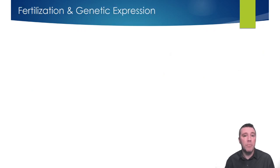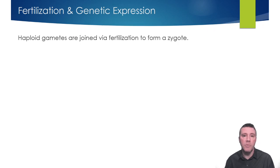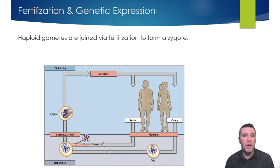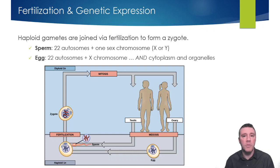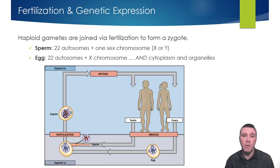After gametes are created, being haploid with only one set of chromosomes, fertilization joins together a sperm cell and an egg cell to form a diploid zygote. Each gamete contributes a portion of that zygote's genetic information — from the sperm cell, 22 autosomes and one of the sex chromosomes; the egg provides another 22 autosomes and an X chromosome. Additionally, a zygote receives nearly all of its cytoplasm and organelles from the egg. This means that extranuclear genetic information, such as that found within mitochondria and chloroplasts, is passed exclusively from mother to offspring.